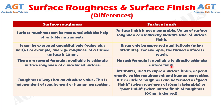Difference number four: roughness always has an absolute value. This is independent of requirement or human perception. Whereas the attributes used to express surface finish depend greatly on the requirement and human perception. A two micrometer surface roughness can be termed as good finish when roughness of 10 micrometers is tolerable, or poor finish when a mirror finish of roughness 100 nanometers is desired.